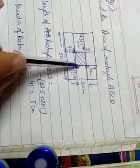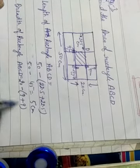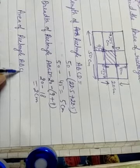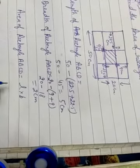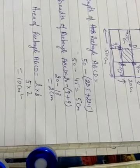Now same for breadth. Breadth of rectangle ABCD: total is 20, with 9 on one side and 9 on the other. So breadth = 20 minus (9 plus 9) = 20 minus 18 = 2 cm. Now area of rectangle ABCD is equal to length multiplied by breadth = 5 multiplied by 2 = 10 cm square.